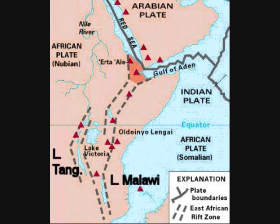When the lithosphere begins to stretch, the two plates begin to separate. Hot rock then rises from beneath the Earth's surface. This causes the crust to weaken. When magma reaches the Earth's surface, a rift valley is born. Some examples of rift valleys are the Rhine Valley in northwestern Europe and the Great Rift Valley in East Africa.